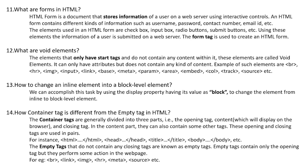Question 12: What are void elements? Void elements are those that only have start tags and do not contain any content within them. They can only have attributes but do not contain any kind of content. Examples of such elements are br, img, input, link, base, meta, param, area, embed, col, track, source, etc.